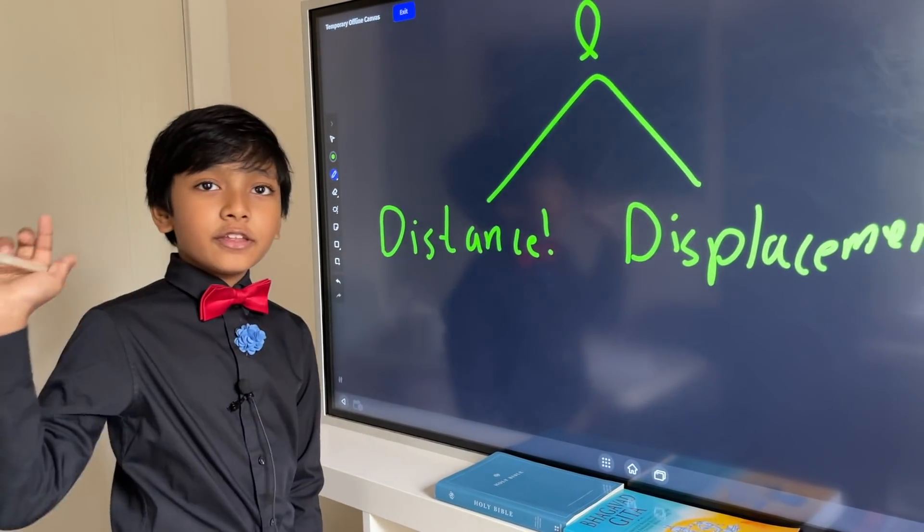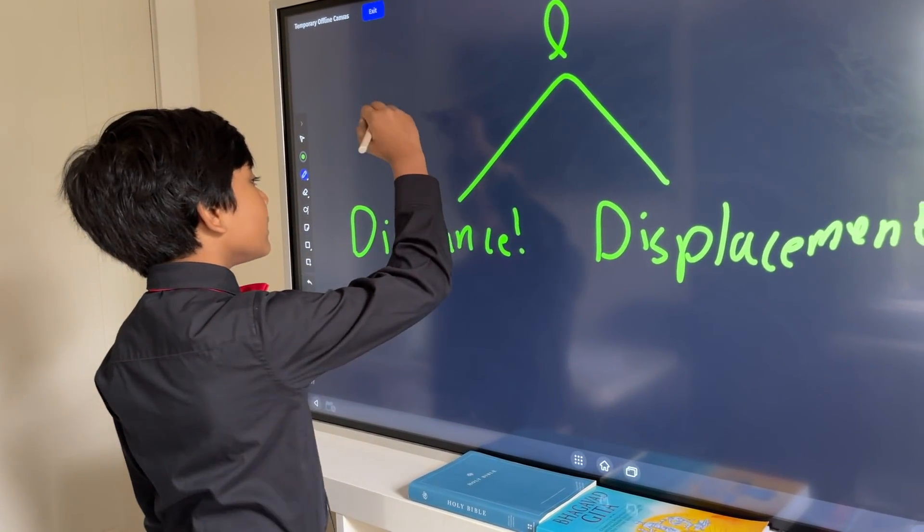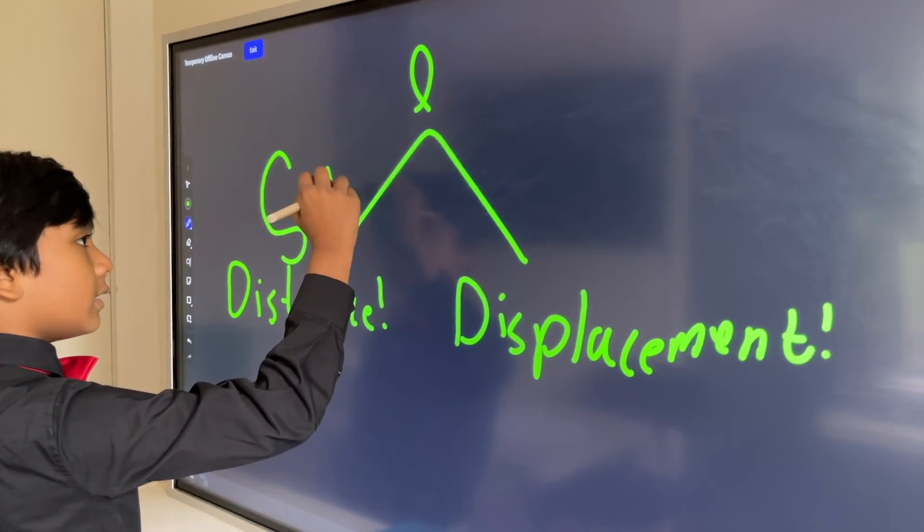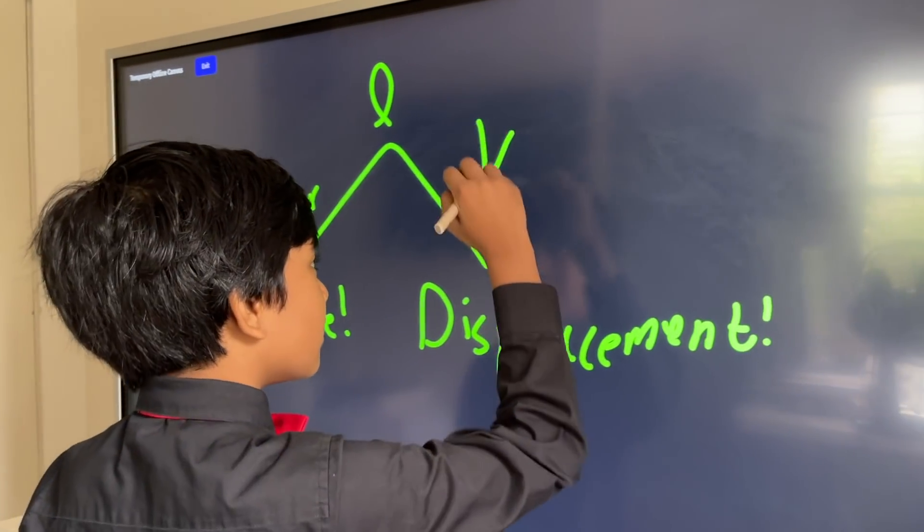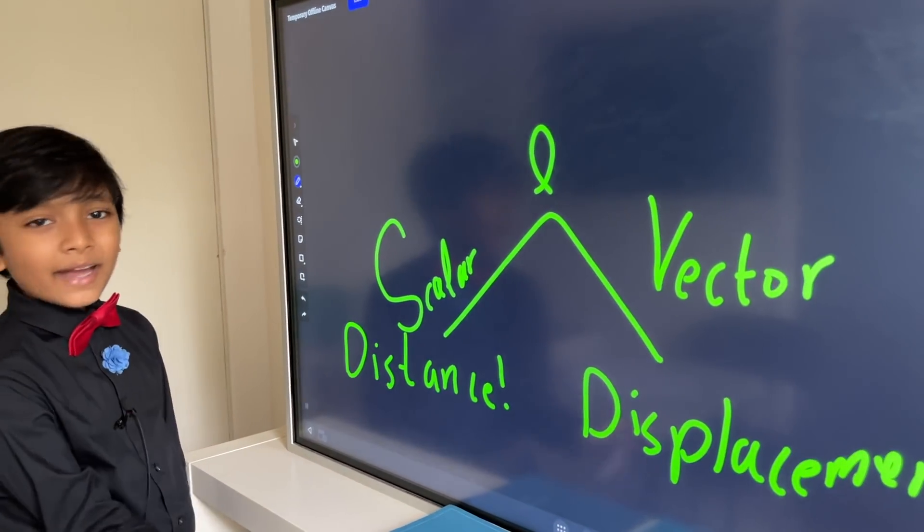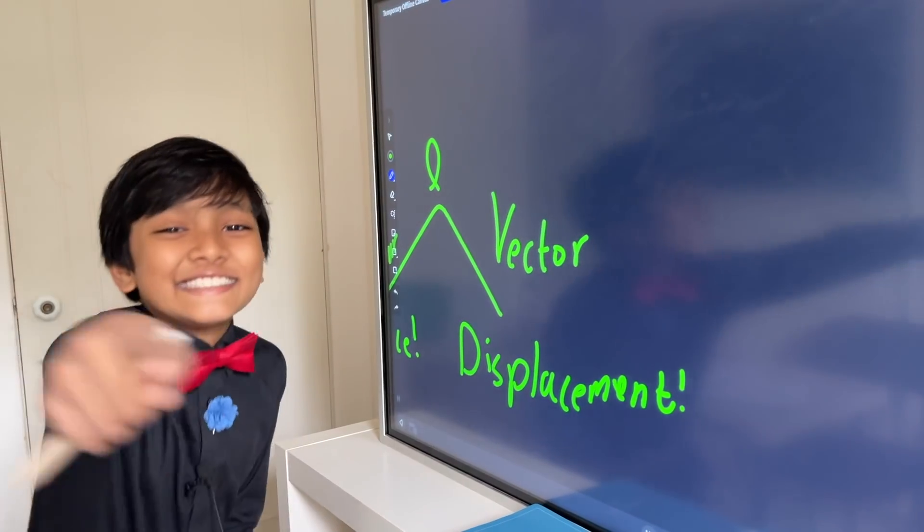Especially Brilliant's links. But, anyways, if you watch our Scalars vs. Vectors episode, you should know that distance is a scalar. But, displacement is a vector. Displacement is a vector, which has magnitude and direction.